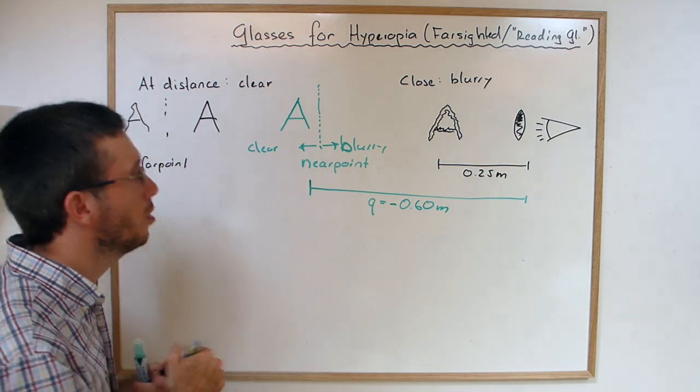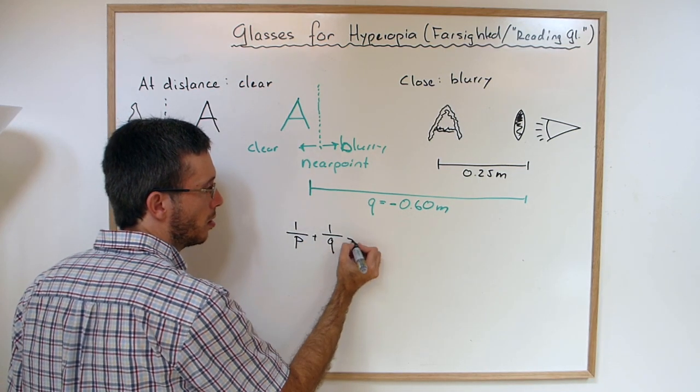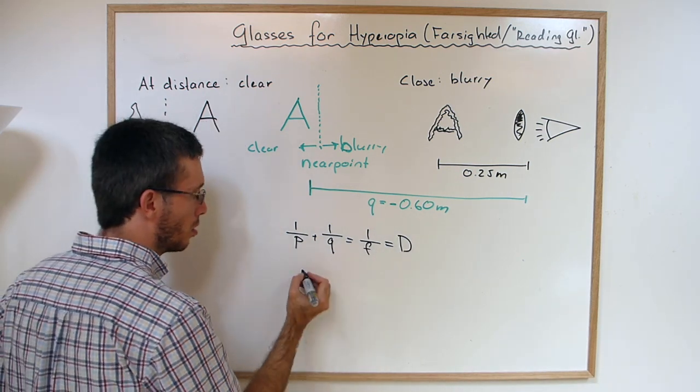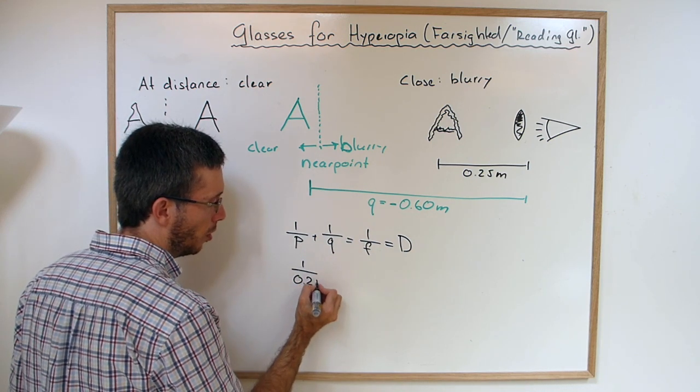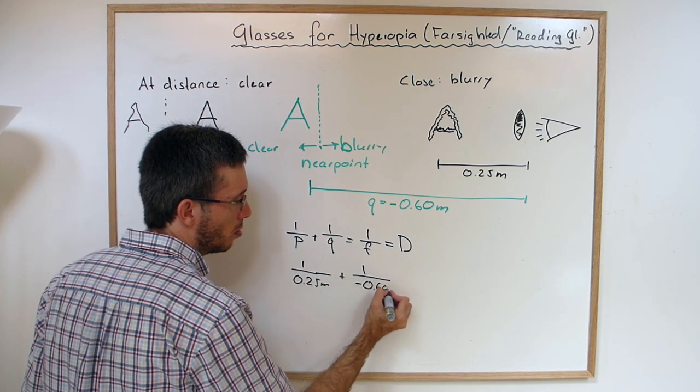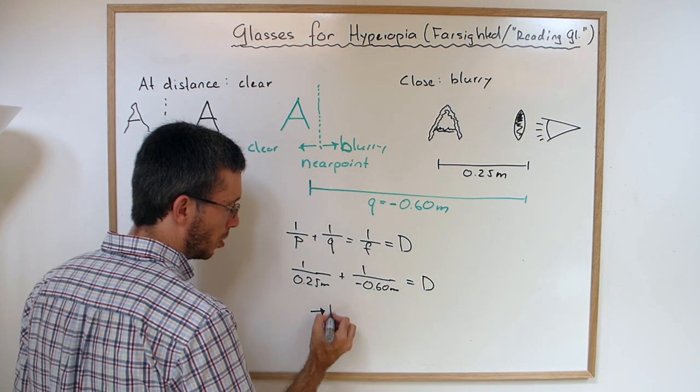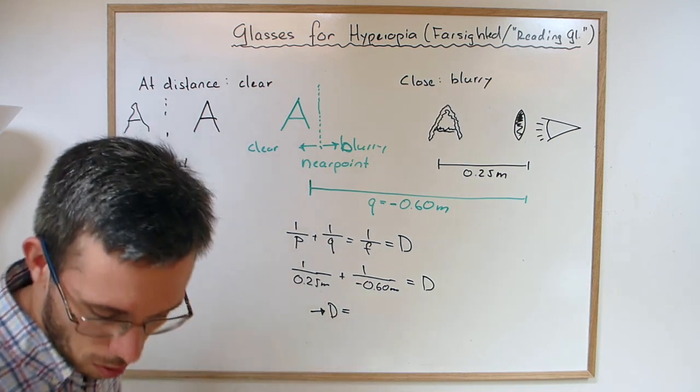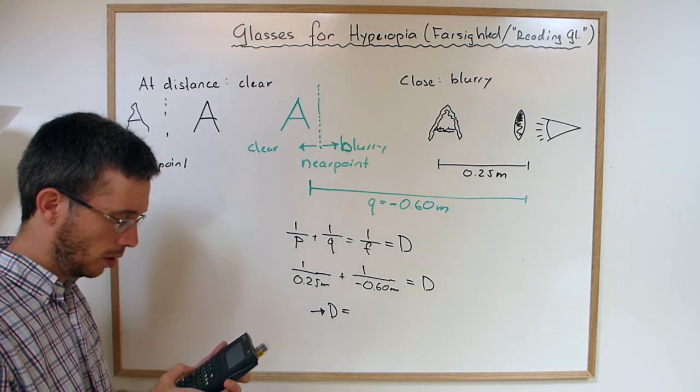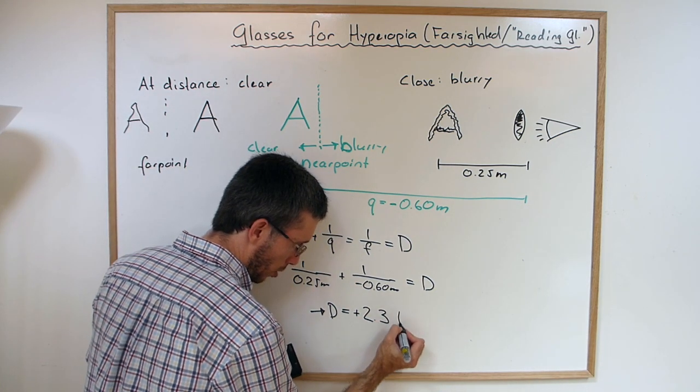Now let's put this in the equation. So 1 over object distance plus 1 over image distance is 1 over the focal distance or is equal to the power in diopters. So 1 over 0.25 meters plus 1 over minus 0.60 meters gives you my diopters. So my diopters are equal to 1 over 0.25 is 4 minus 1 over 0.6, which equals 2.3 diopters.